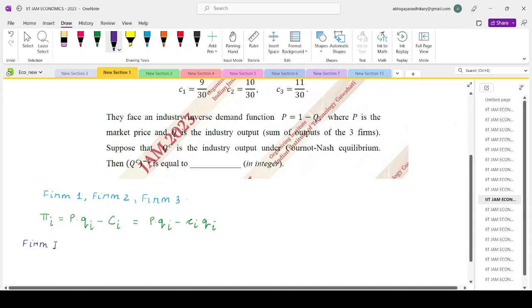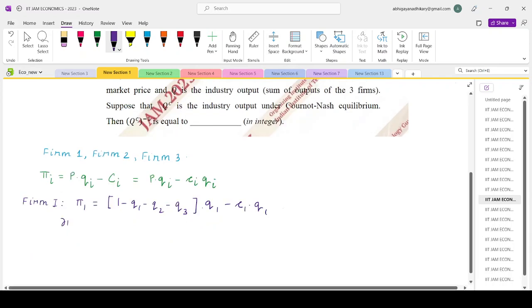Let's take firm 1. The profit expression would be P is 1 minus Q. So 1 minus Q1 minus Q2 minus Q3 multiplied by Q1 minus C1 times Q1. For profit maximization, del pi 1 by del Q1 equals 0. That will give you 1 minus 2Q1 minus Q2 minus Q3 minus C1 equals 0. So that means 2Q1 plus Q2 plus Q3 equals 1 minus C1. Put this as equation number 1.